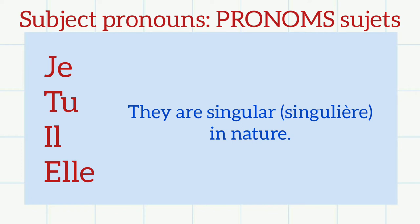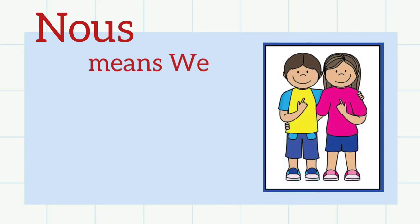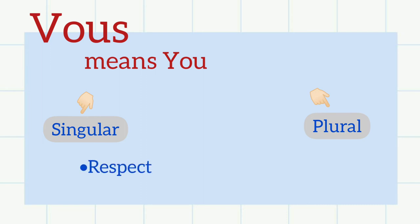Let's move on to the next pronoms sujets, which is nous. Nous means we. The next is vous. Vous is you. Now vous can be addressed either for singular or for plural. Singular when we are addressing somebody out of respect, or it can also be used to address plural you. If I want to say you all, I will say vous.